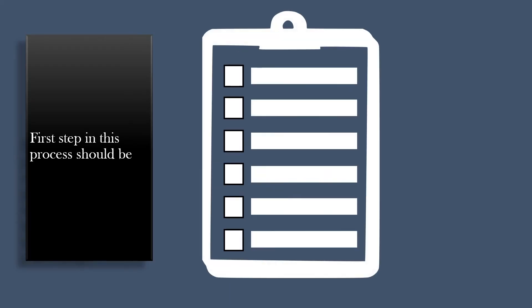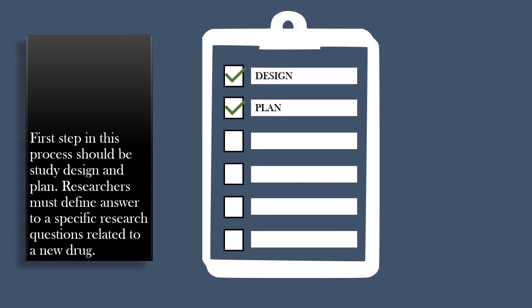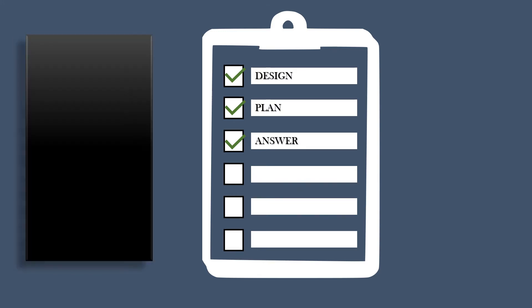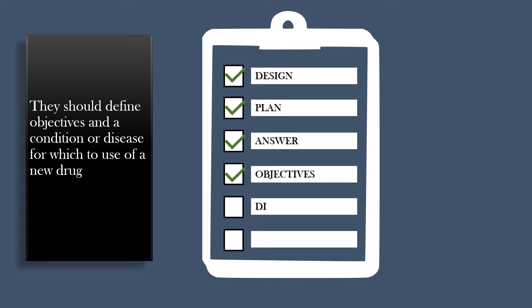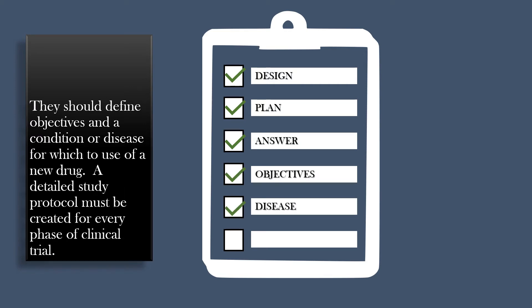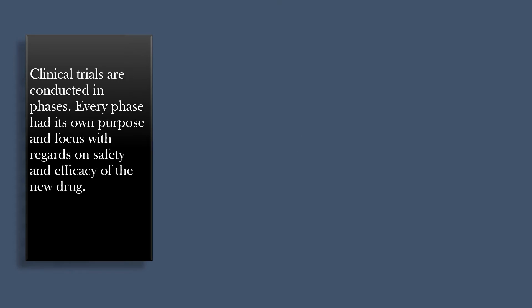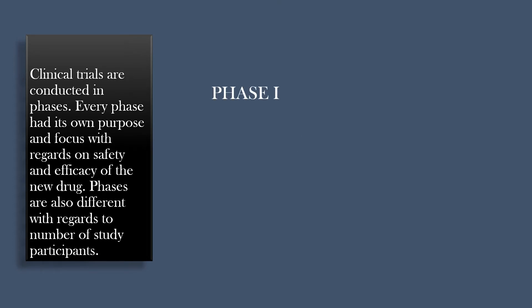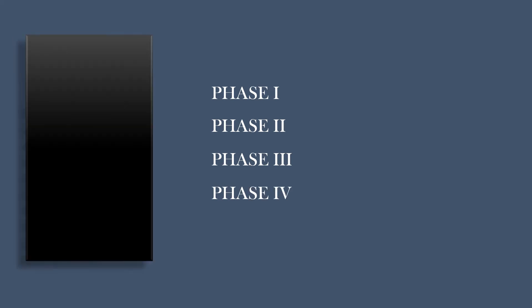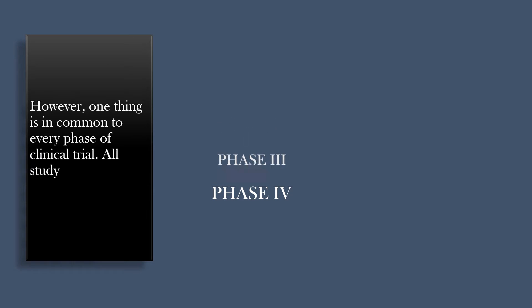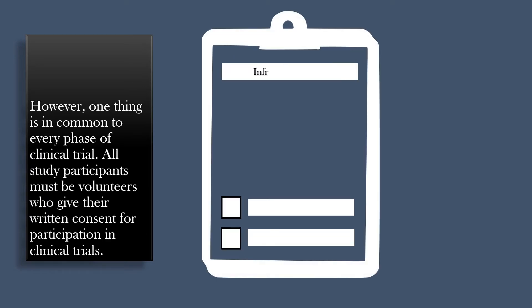The first step in this process should be study design and plan. Researchers must define answers to specific research questions related to a new drug, and should also define objectives and a condition or disease for which to use the new drug. A detailed study protocol must be created for every phase of clinical trial. Clinical trials are conducted in phases, each with its own purpose and focus regarding safety and efficacy, and phases differ in number of study participants. One thing is common to every phase: all study participants must be volunteers who give their written consent for participation.